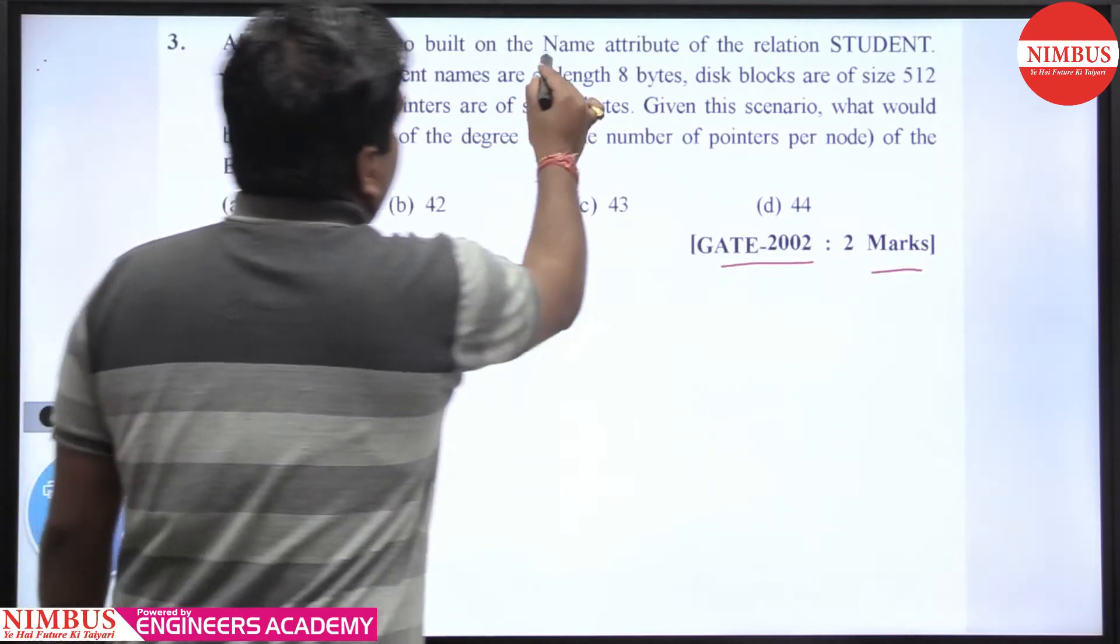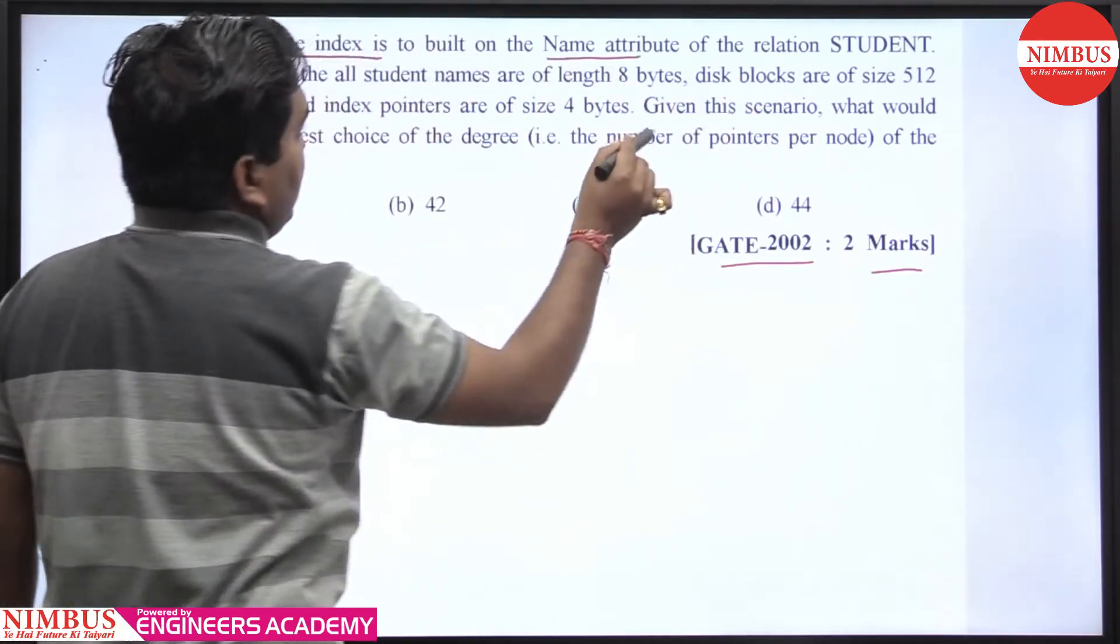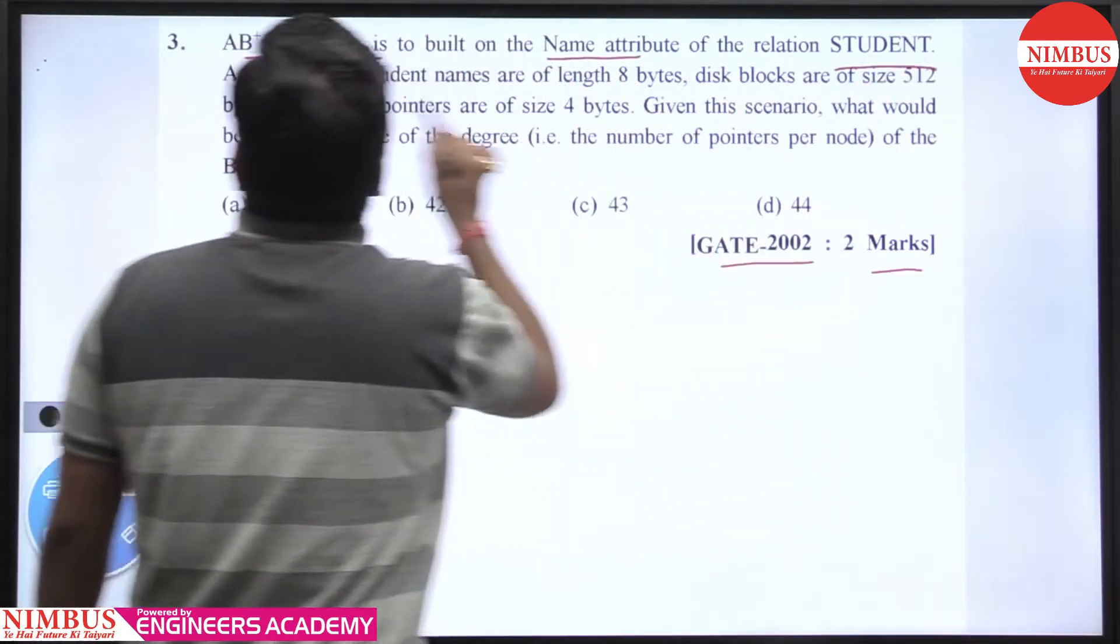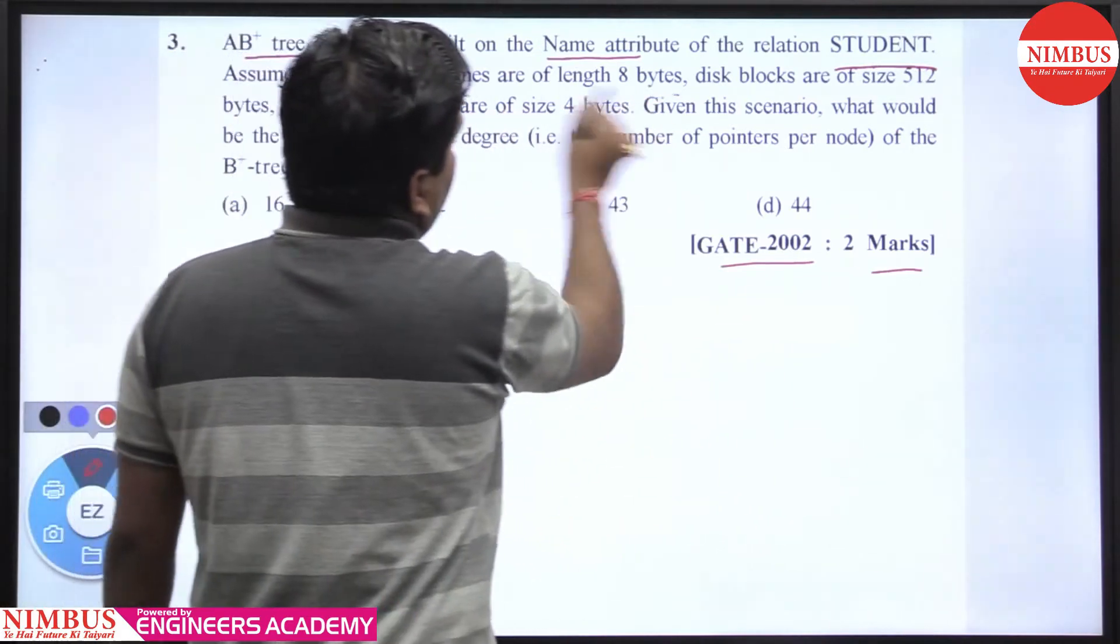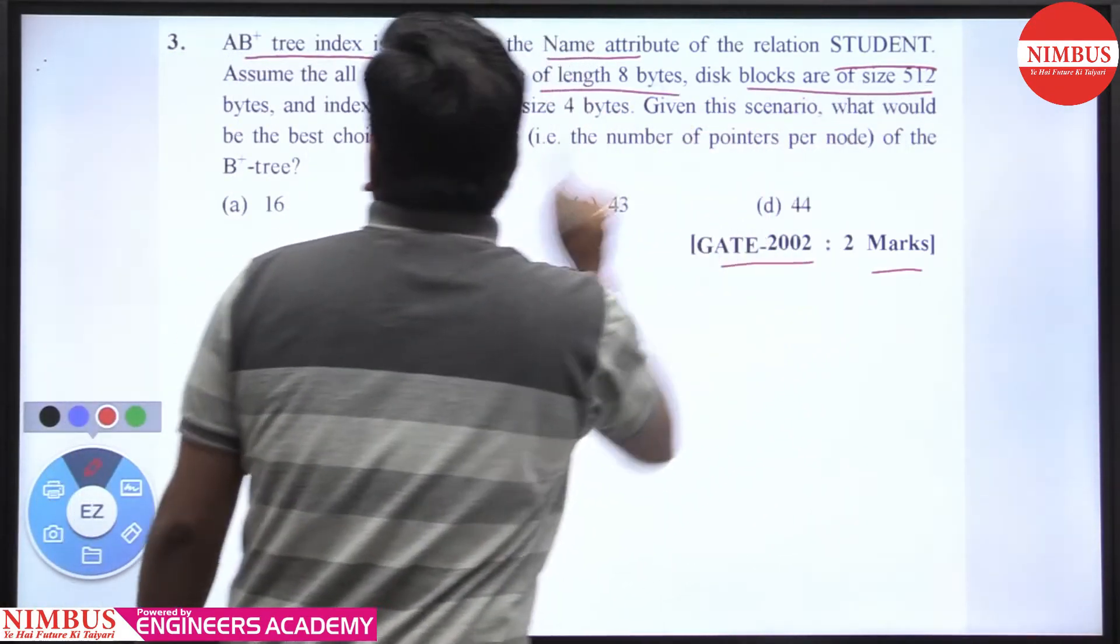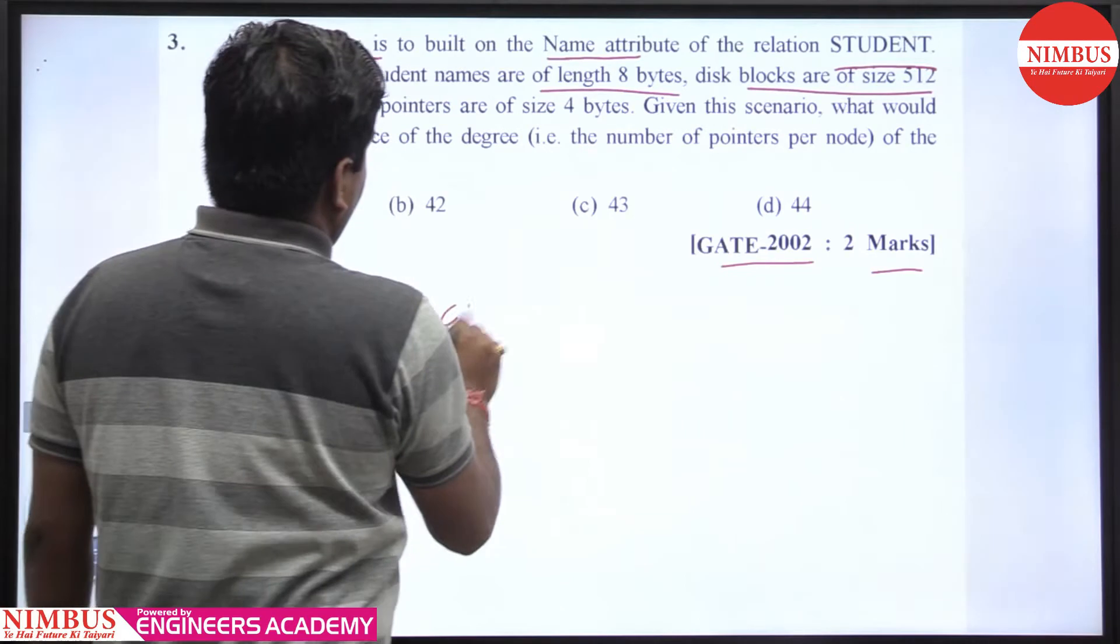A B+ tree index is to be built on the name attribute of the relation STUDENT. All student names are of length 8 bytes, and the block size is 512 bytes.